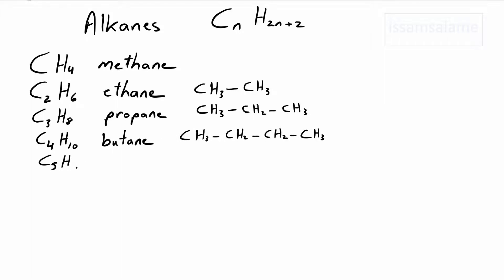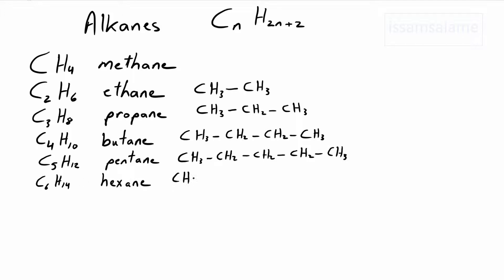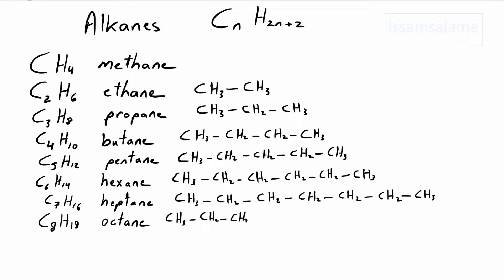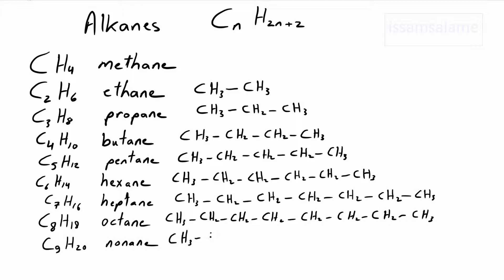An alkane with five carbon atoms is called pentane — we draw it like this. An alkane with six carbon atoms is called hexane. Seven carbon atoms: heptane. Eight carbon atoms: octane. Nine carbon atoms: nonane.